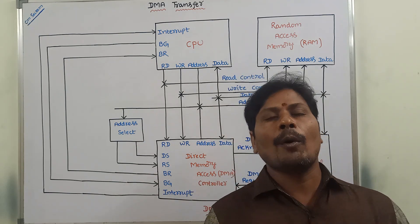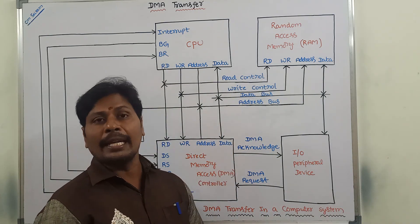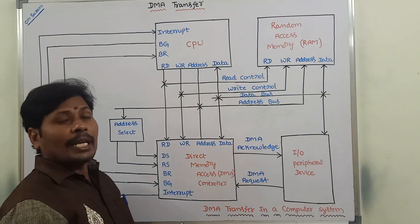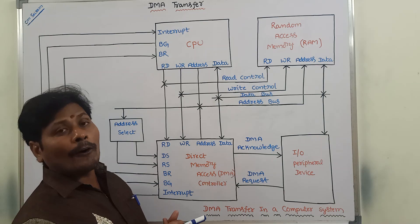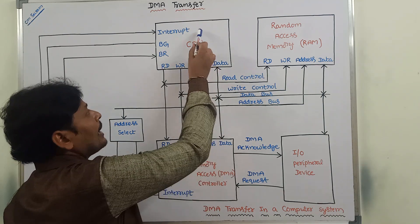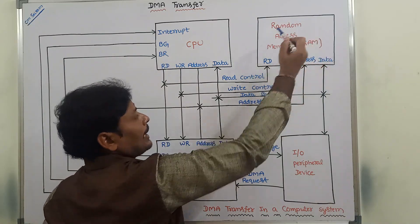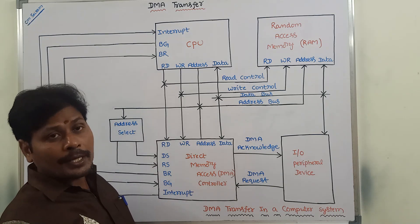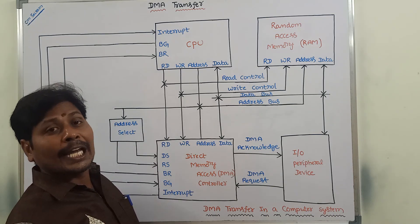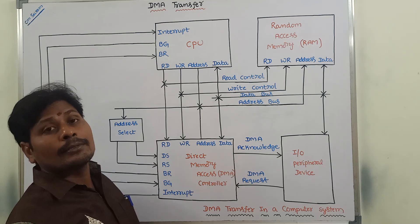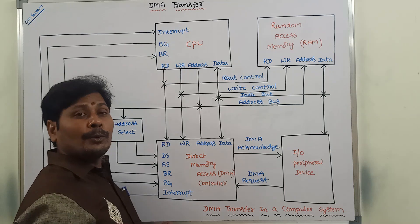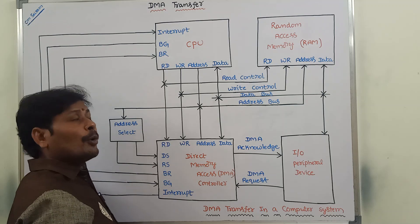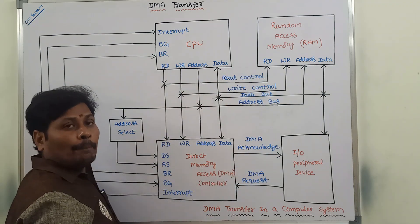In this video, we will cover how DMA transfer can be done with the help of a block diagram. Generally, a computer system consists of three components: first one is CPU, second one is random access memory, and third one is I/O peripheral devices. The DMA controller can be placed along with these three components in a computer system, so the computer system now consists of four components as shown in the block diagram.